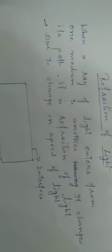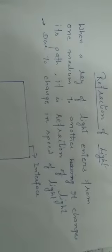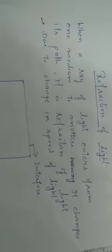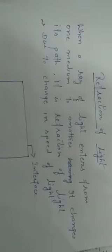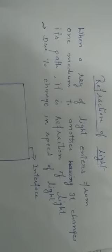So when light enters from one medium to another. It can be entered from rarer to denser or denser to rarer. Then it changes its path. Now why it changes? Because its speed has to be changed. Naturally.